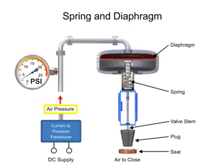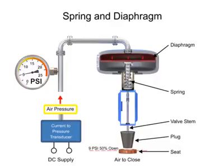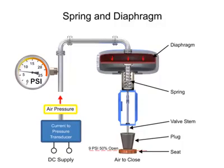For example, a pressure of 9 psi applied to the diaphragm moves the spring and valve stem to 50% of operating range.